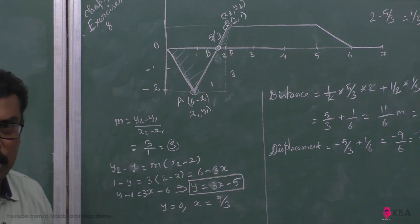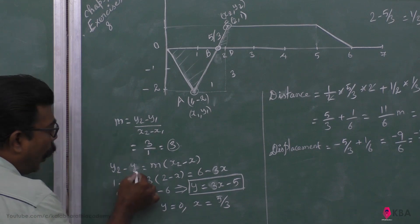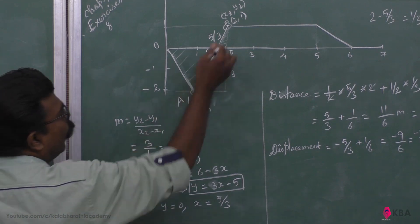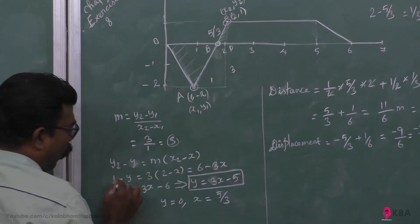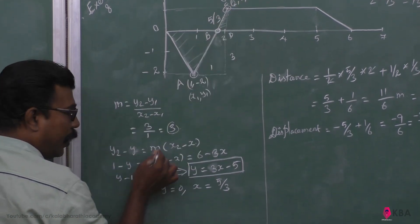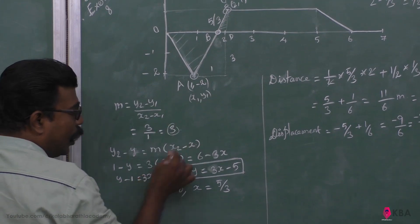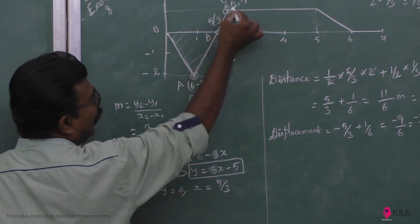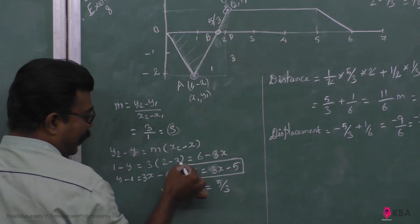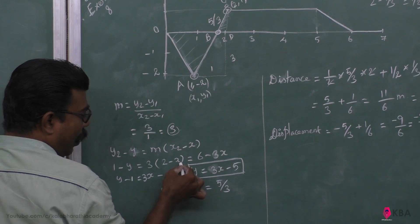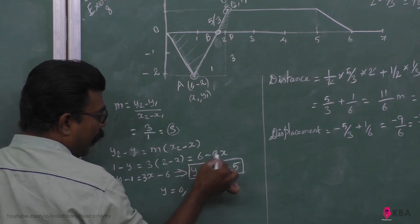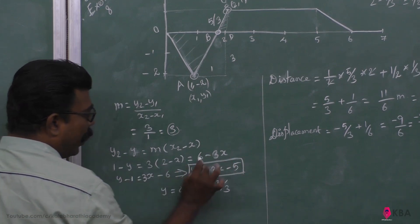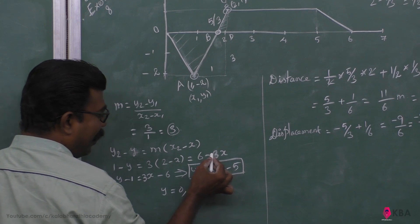9th layer, particular form. So Y2 minus Y is equal to M, converted to 3, into X2 minus X. X2, Y2 — it is 2 minus X. Multiply — this becomes 6 minus 3X. So 1 minus Y equals 6 minus 3X.